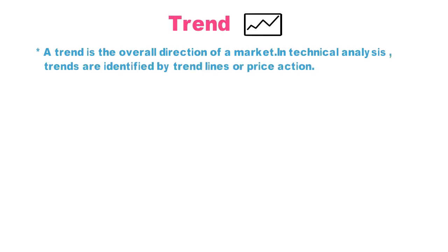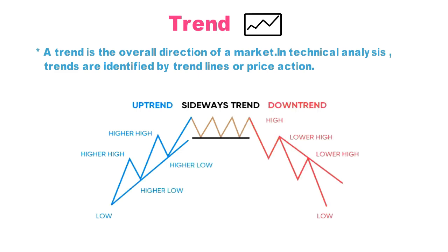Trend indicators are used to identify which trend we are in. In the stock market, there are three types of trends: uptrend, downtrend, and sideways. Uptrend means higher top and higher bottom formation; downtrend means lower top and lower bottom; sideways means same tops with same bottoms. The famous quotation is: trend is your friend — wait until it bends. Don't go against the trend.